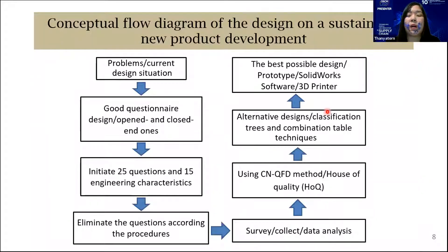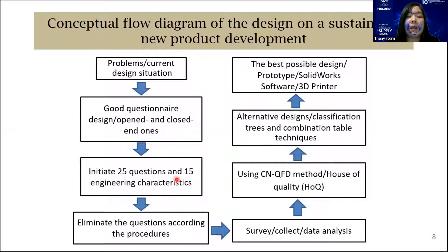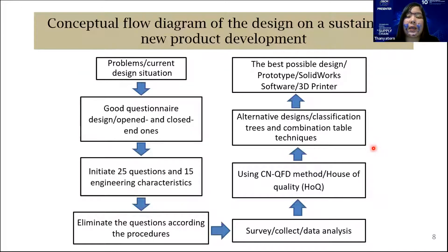Here is the conceptual diagram of design for sustainable new product development. It starts with the problem and current design situation, then creates a questionnaire with open and closing questions — initially 25 questions and 15 engineering characteristics. After that, useless questions are eliminated according to the procedure, the survey is conducted, data is analyzed using the CN-QFD method, alternative designs are generated from a combination table, and finally the best design prototype is produced using SolidWorks and a 3D printer.